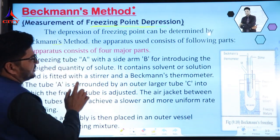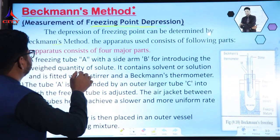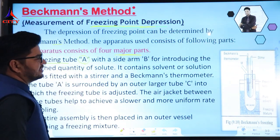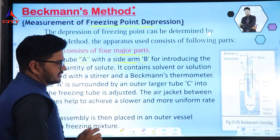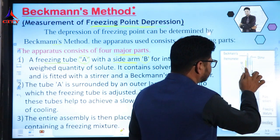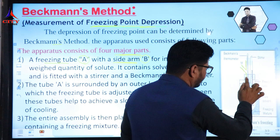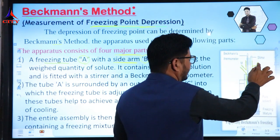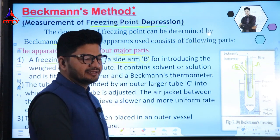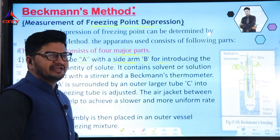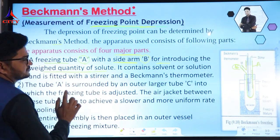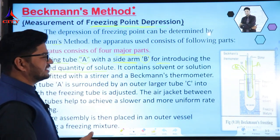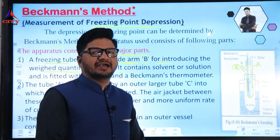Beckman's method has the following major parts. There is a freezing tube which is denoted with an arm. We have a freezing tube and a side arm. The side arm is for introducing a weighed quantity of solute.